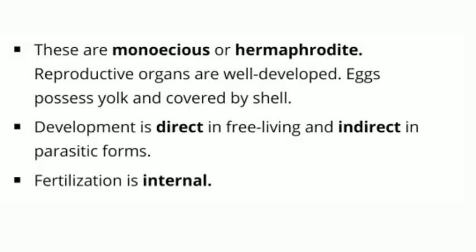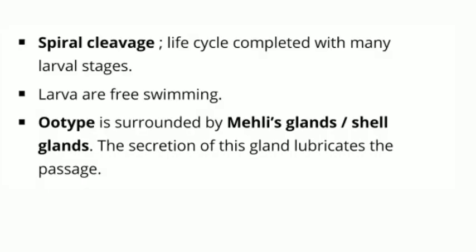These organisms are monoecious or hermaphrodite, meaning both male and female reproductive organs are present in the same organism. Reproductive organs are well developed. Eggs possess yolk and are covered by a shell. Development is direct in free-living forms and indirect in parasitic forms. Fertilization is internal. There is spiral cleavage, and the life cycle is completed with many larval stages. Larvae are free-swimming.